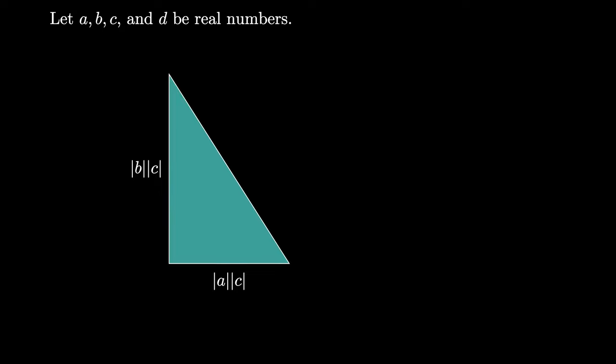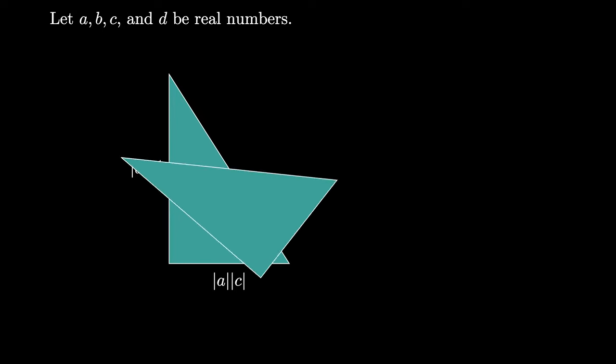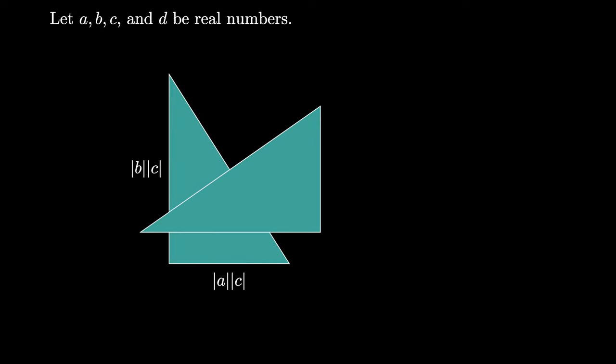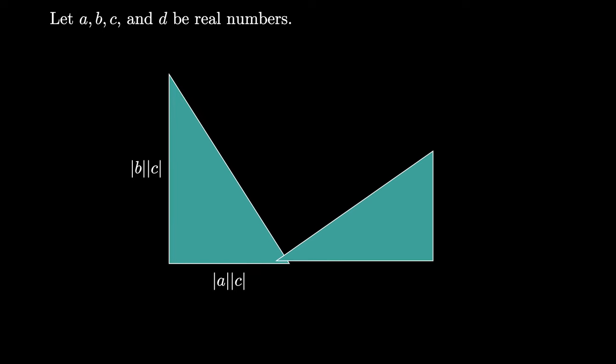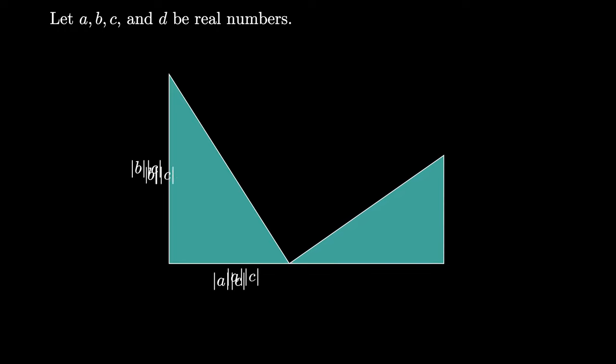If we assume that C is non-zero, then we can scale this triangle by the absolute value of D over the absolute value of C, producing this triangle, which has leg lengths absolute value of B times absolute value of D and absolute value of A times absolute value of D.